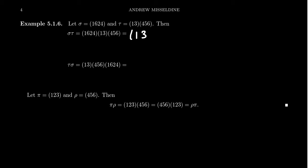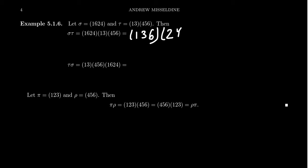For 3: the first cycle has no 3, the second sends 3 to 1, and then the last sends 1 to 6 — so 3 goes to 6. For 6: reading right to left, 6 goes to 4, then 4 goes to 1, which closes the cycle. Starting a new cycle with 2: 2 goes to 4, then 4 goes to 5. Then 5 goes to 6, closing that cycle. So sigma tau is the product of two three-cycles: (1 3 6) and (2 4 5).